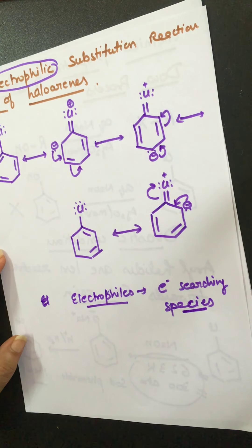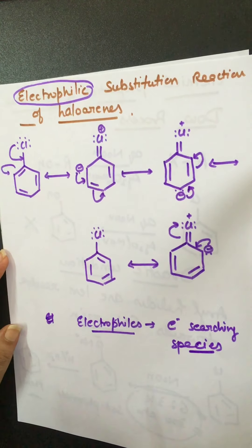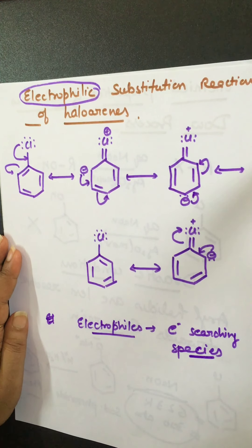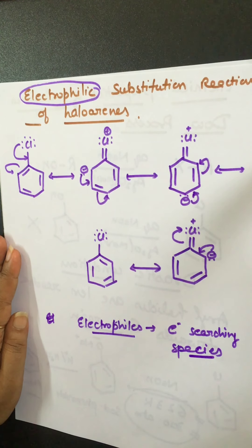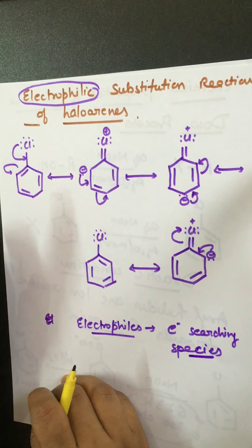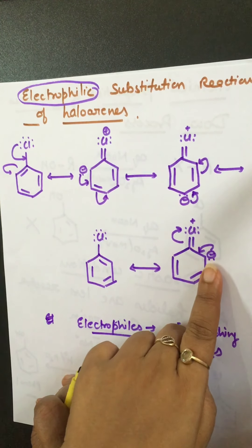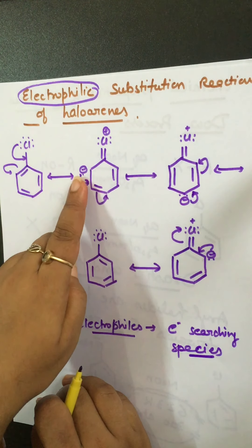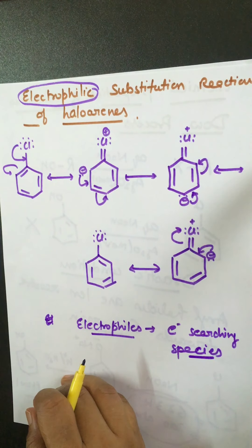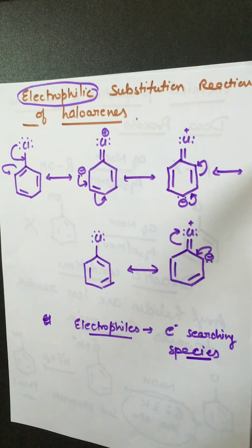When electrophiles are positively charged or electron-deficient, they definitely require electrons. So they find electron-rich centers. Let's look at the resonating structures of haloarenes — I have drawn resonating structures for chlorobenzene. In all the resonating structures, the ortho and para positions with respect to the halogen are electron-rich, so the electrophile will attack on those ortho and para positions.